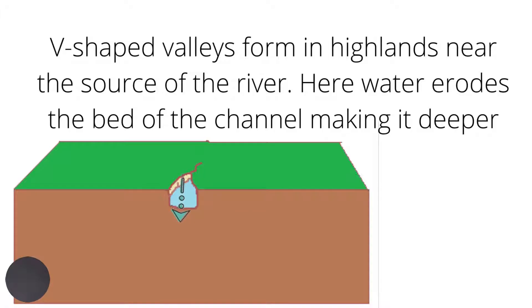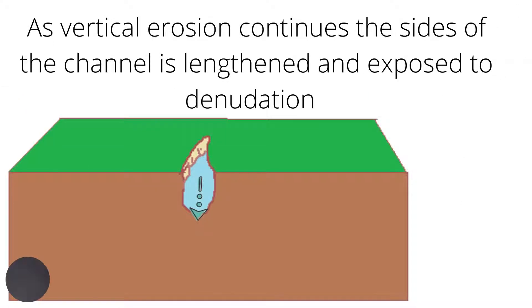Let's first look at V-shaped valleys. V-shaped valleys form in highlands near the source of the river. Here, the water erodes the bed of the channel, making it deeper. As vertical erosion continues, the sides of the channel will be exposed and lengthened.